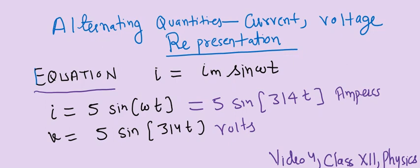Omega is generally 314, calculated by using 2π into 50, which equals 314, where 50 is the frequency. You can see I've given two examples of equations of alternating quantities: current and voltage.